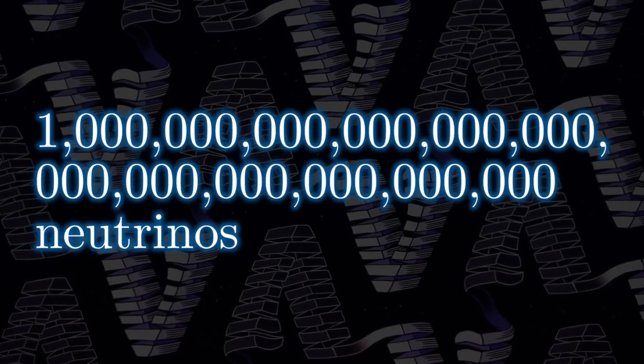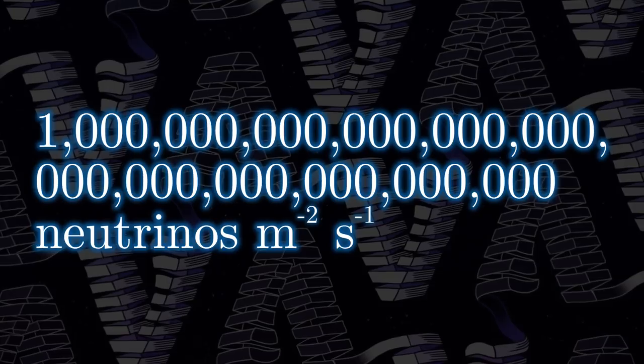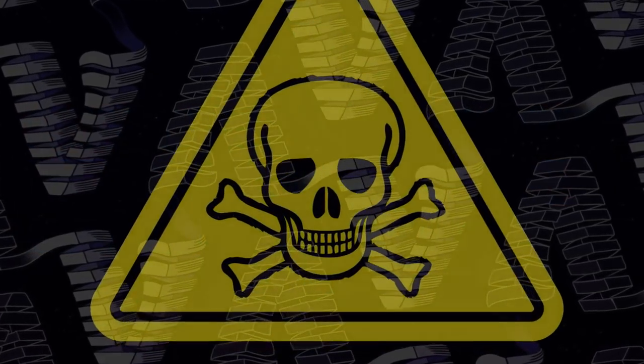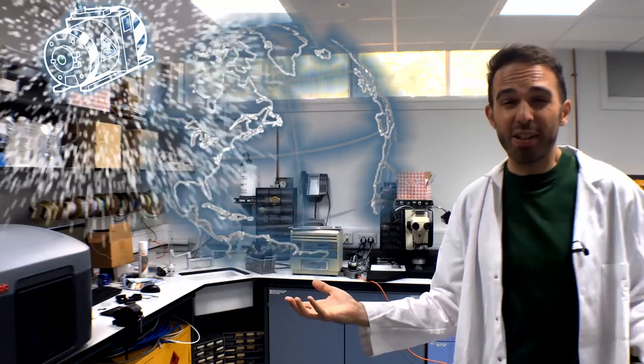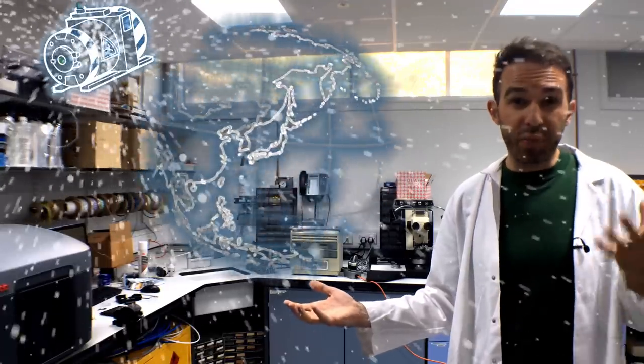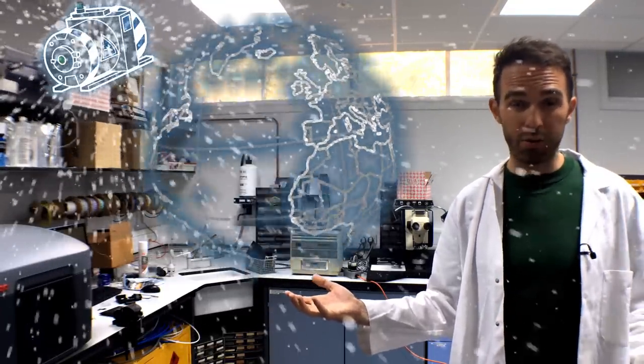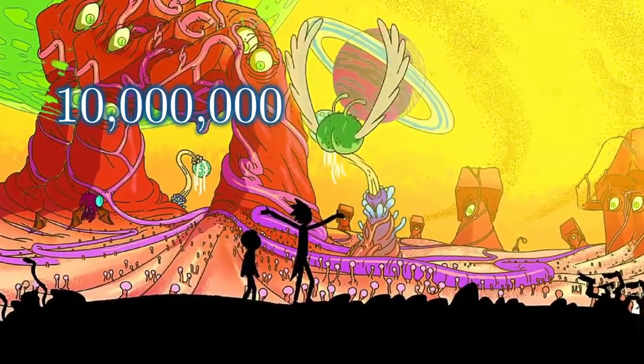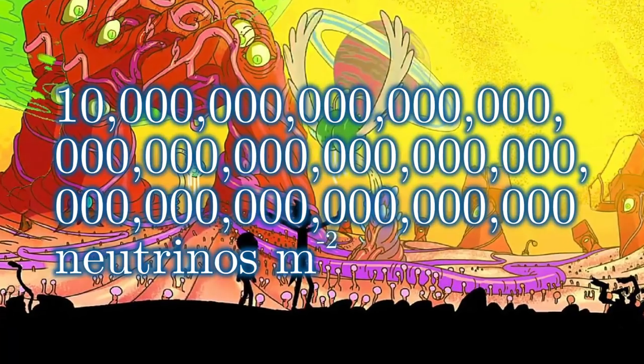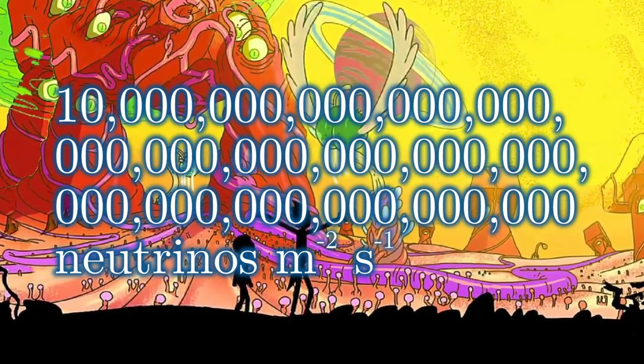10 to the 36 neutrinos per unit area over the course of about a second should be enough to kill you. Then again, Rick's neutrino bomb is supposed to be able to wipe out all life on the planet. That means if I were stood on the other side of the Earth, I still need to get a lethal dose of neutrinos. What that means is we need to up our numbers because as the neutrinos travel outwards from the bomb, they spread out more and more. A flux of just a squanch over 10 to the 52 neutrinos per meter per second from the bomb should do it.